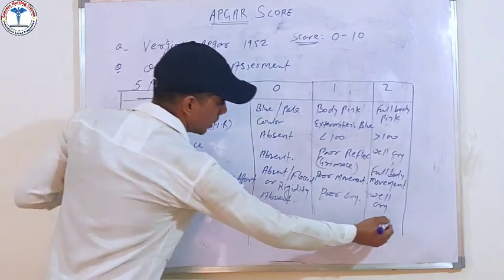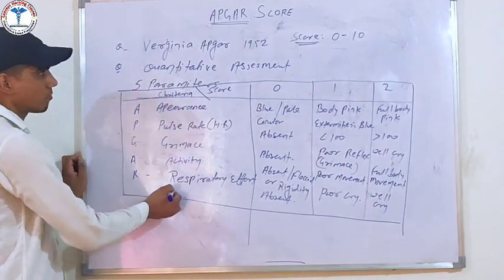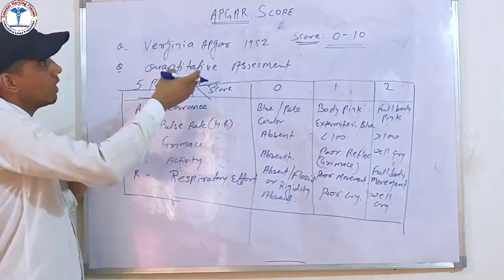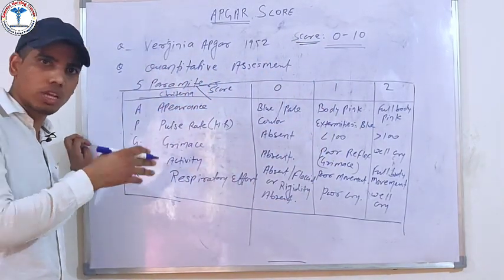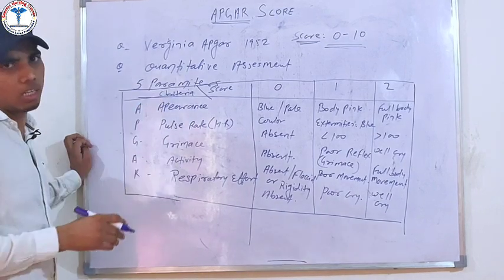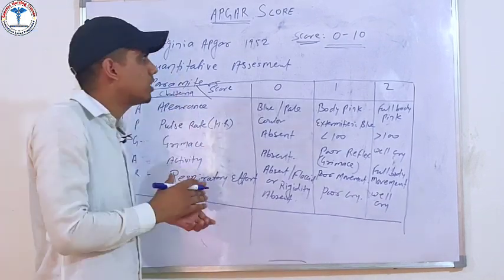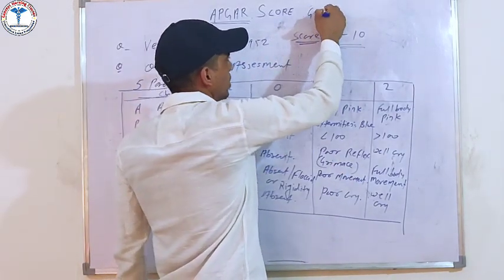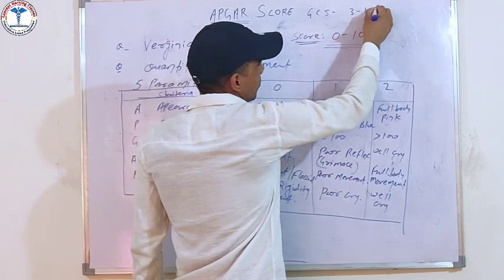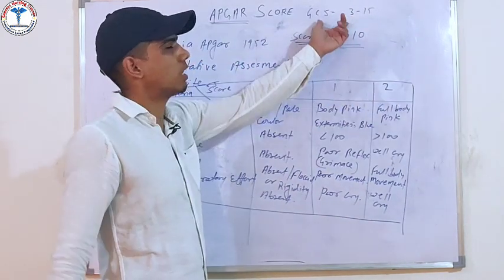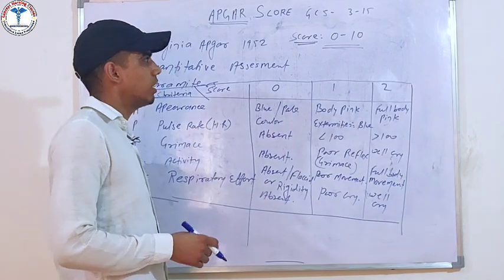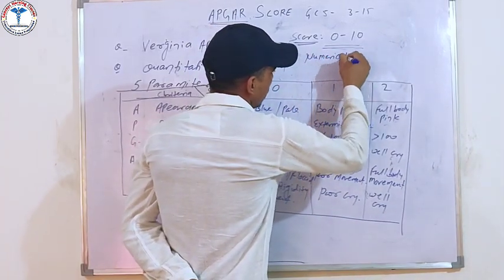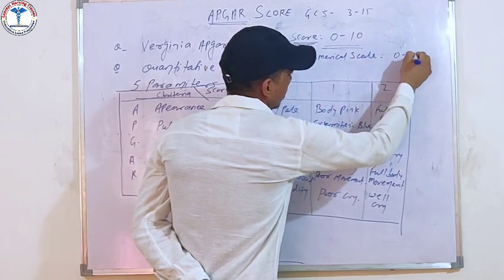The total Apgar Score ranges from 0 to 10. This is a numerical scale similar to the GCS score, which ranges from 3 to 15. The Apgar is scored on a scale of 0 to 10 based on the five parameters.